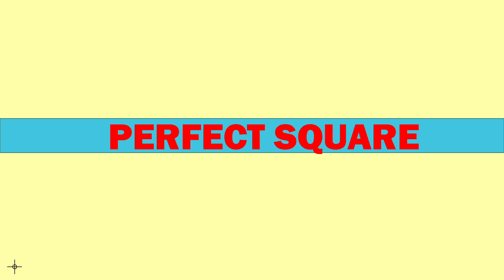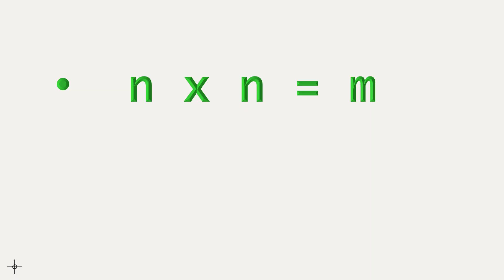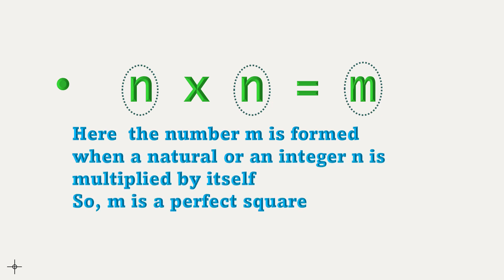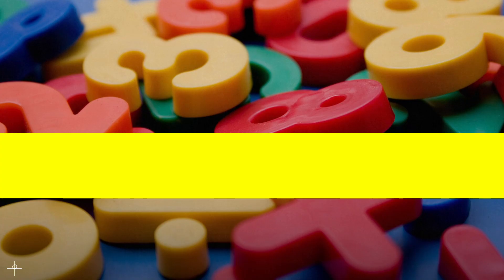Now let's discuss the perfect square. What is a perfect square number? When any integer or natural number is multiplied by itself, the product we get is a perfect square. Here, m is a perfect square because m is formed when the natural number n is multiplied by itself.